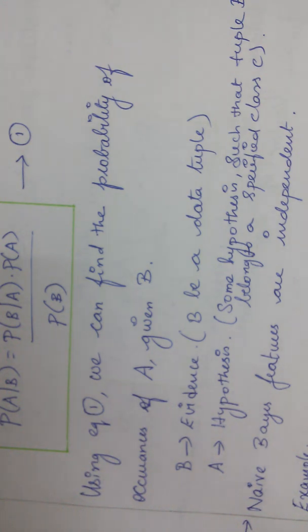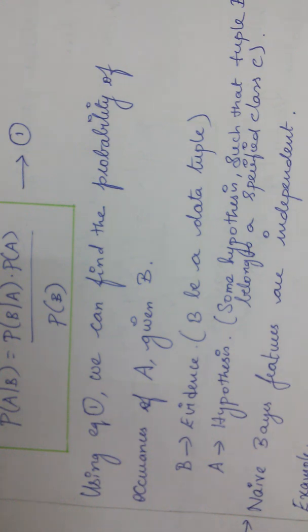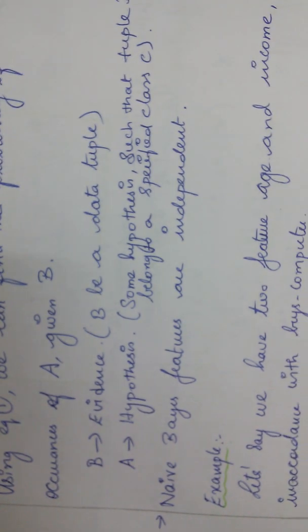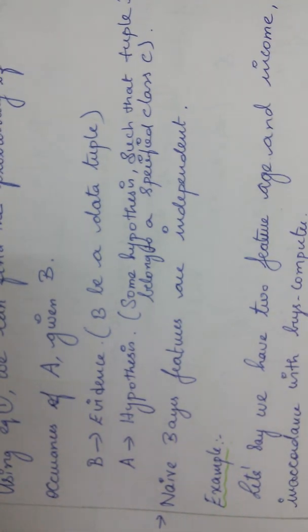I told you it's a classification problem. So obviously the data tuple should fall under some classification — it should be classified under some specific class. So that assumption is nothing but your hypothesis: some hypothesis such that my tuple B belongs to some specific class C. And what are Naive Bayes features? Actually, Naive Bayes features are independent.